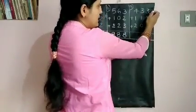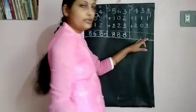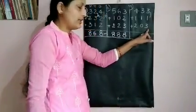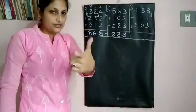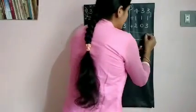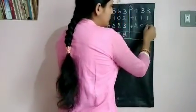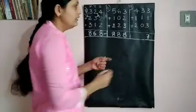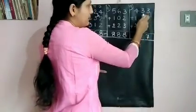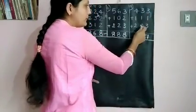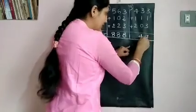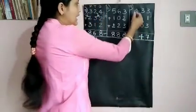So add the ones first. 3 plus 1 is 4. 4 plus 3, 7. 3 plus 1 plus 3 is 7. Now add the tenths. 3 plus 1 is 4. 4 plus 0 is 4 itself.